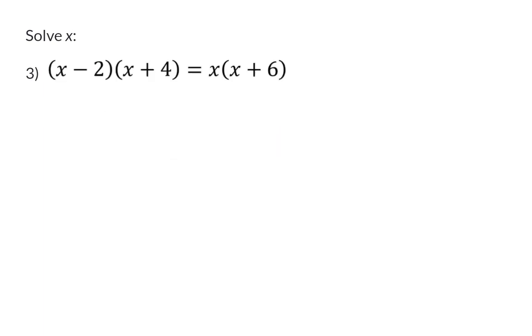In example 3, we once again have a few brackets. On the left hand side, we have two binomials that we need to multiply. This means each term in the first bracket has to be multiplied with each term in the second bracket. This will give me x squared plus 4x minus 2x minus 8.